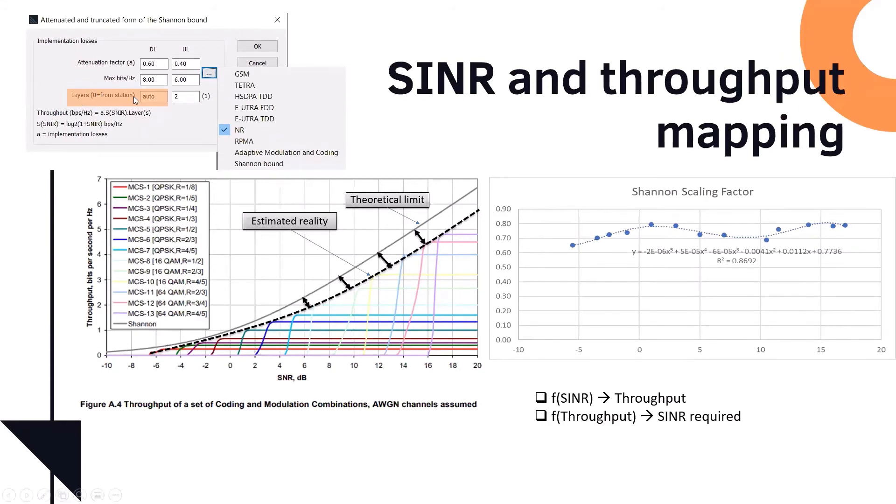And one thing here I should note to you, we introduce layers. Layers, we're talking about multiple spatial layers. This means that you can double the throughput or triple the throughput, because you have multiple spatial layers in your link or in your antenna. So if you put it to auto, the software will pick up the value from the base station, so you can set up the layers, how many layers per station, depending on the antenna capability. The bottom line is, this is a built-in function in the software that will take care of translating your signal-to-noise ratio into a throughput and vice versa.